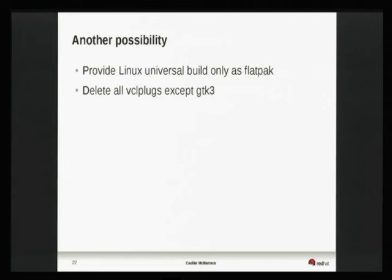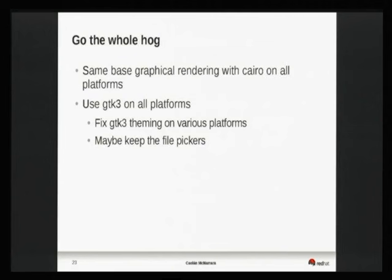What could also be done is that for daily builds and eventual cases, you could end up deploying the whole thing as a flatpak, which means you can delete all the VCL plugs except the GTK3 one — the GTK3 one is then part of your flatpak. That gives you another solution for the diverging-experience problem. You could go the whole hog and port the whole thing to GTK3 on all platforms, spending your efforts on making GTK3 theming work better under Mac OS X or Windows. Or you could keep the file pickers — which are fundamentally part of the experience — and for the rest try to get away with theming.